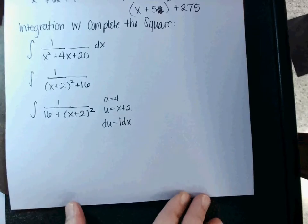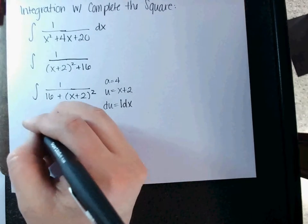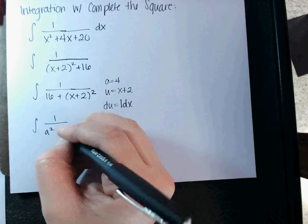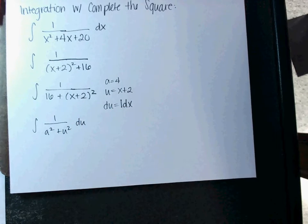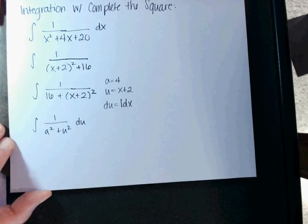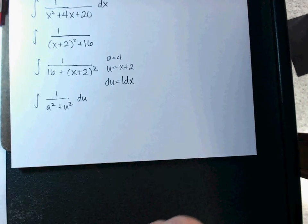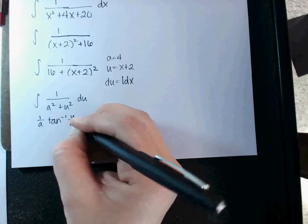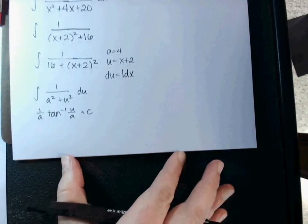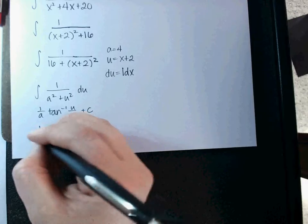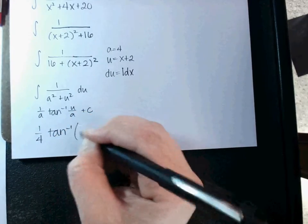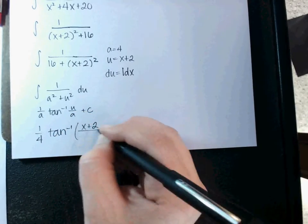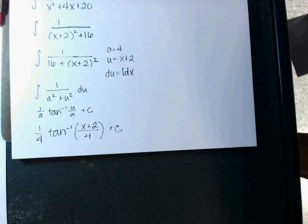Which means that when I rewrite my integral, I'm going to have 1 over A² plus U². And that is your inverse tan formula. So what's it going to be? Remember the general is 1 over A inverse tan U over A. So what is it going to be here? 1 over 4. Inverse tan x plus 2 over 4 plus C. So it's really not that hard as long as you understand what complete the square is to begin with.